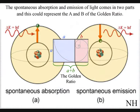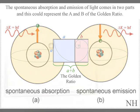The spontaneous absorption and emission of light comes in two parts, and this could represent the a and b of the golden ratio.